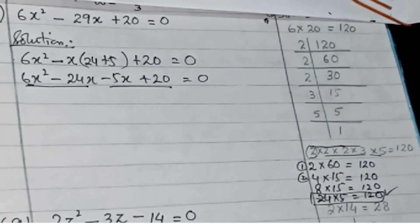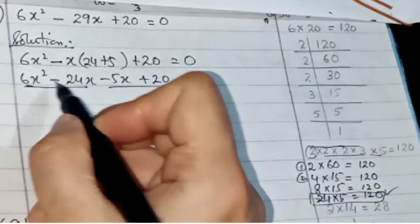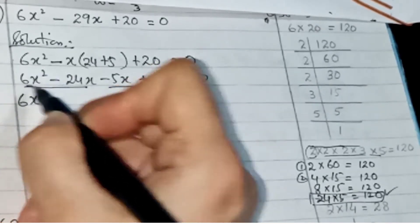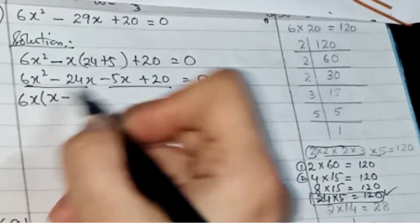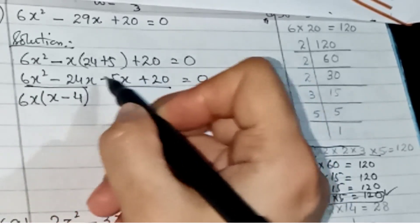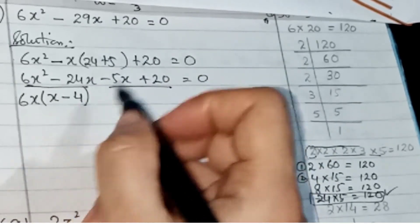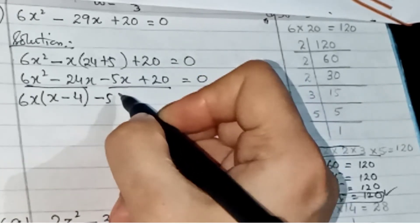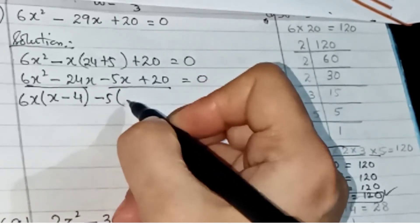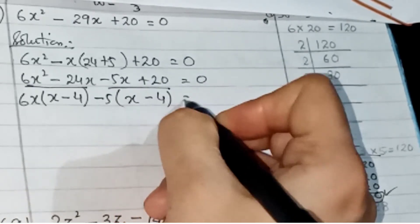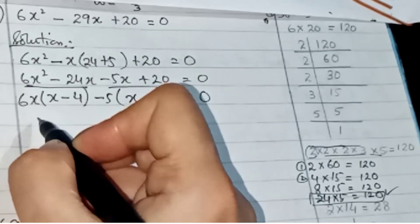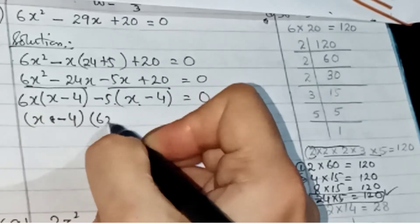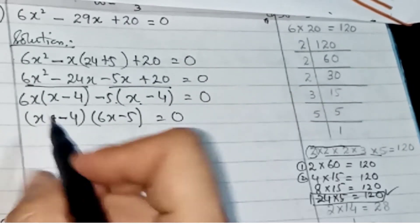Now make two pairs and take common from each. From the first pair take 6x as common, leaving x minus 4. From the second pair take minus 5 as common, leaving x minus 4. Since both brackets are the same, we write (x − 4)(6x − 5) = 0.